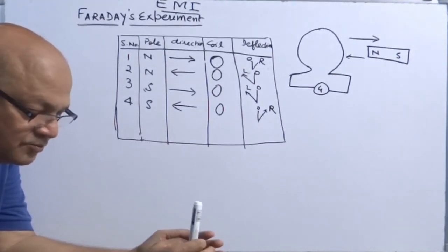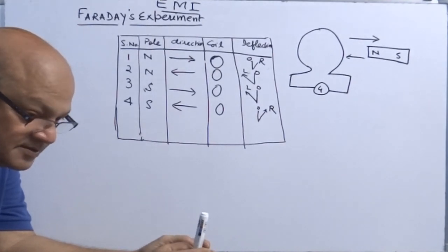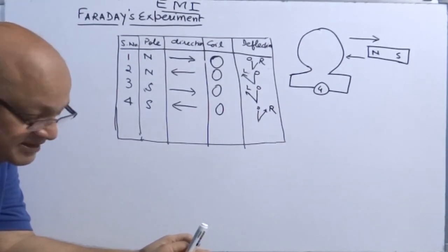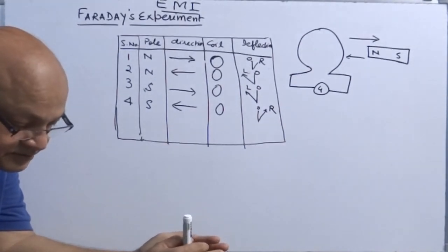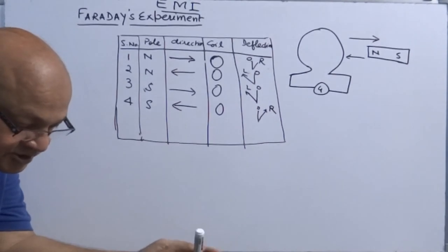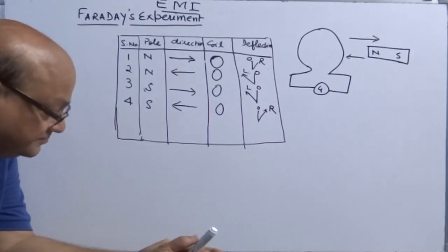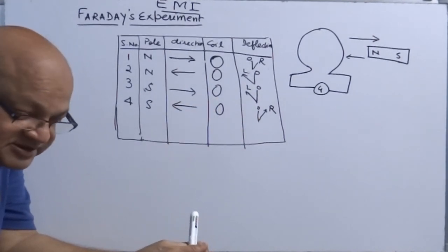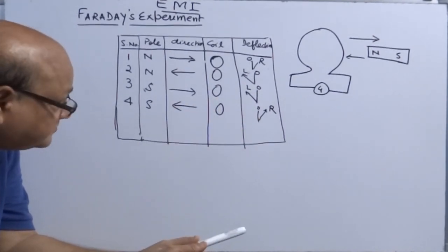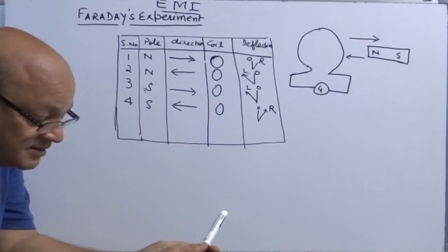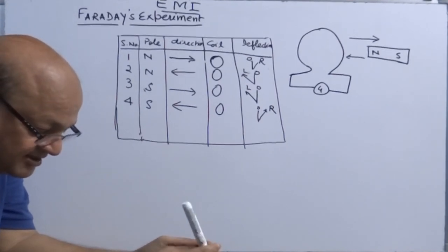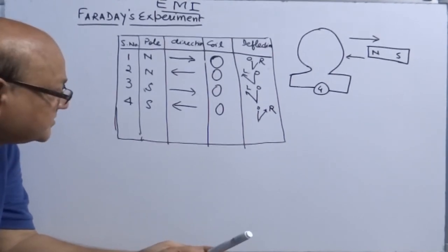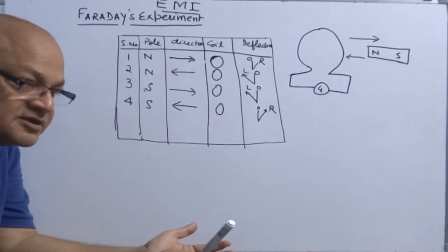The moment relative motion breaks down, the deflection moves towards zero. The EMF induced is termed as induced EMF, and once EMF or potential difference is there across the ends of the wire, current flows — this is termed as induced current.